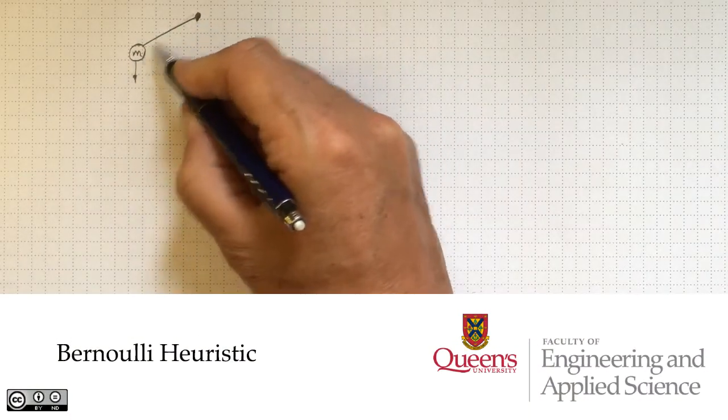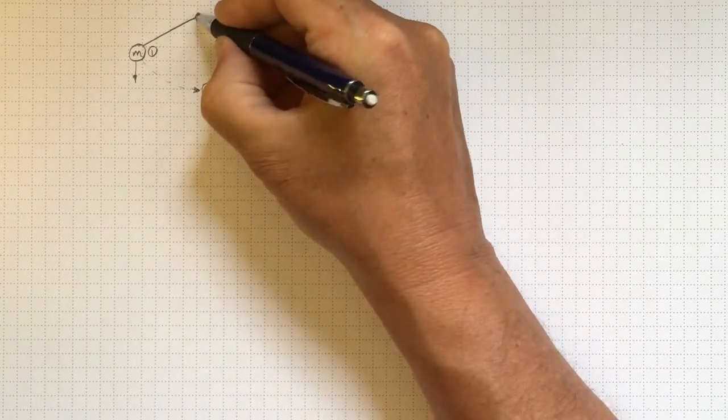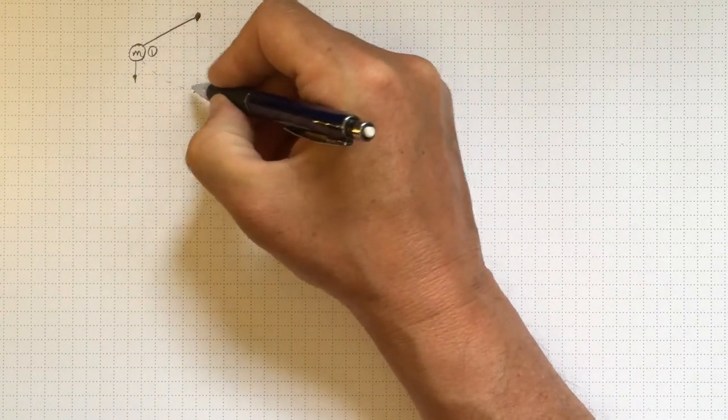In solid mechanics, if we have a mass at the end of a string like this, working as a pendulum around this pivot here, then we can look at the different kinds of energy.